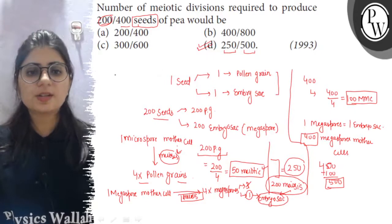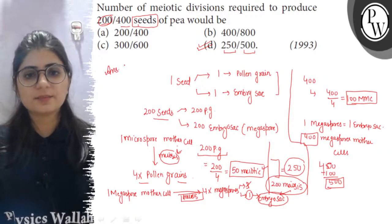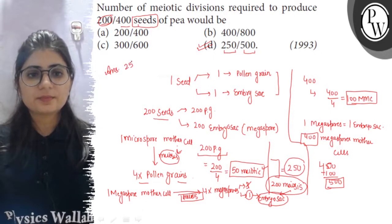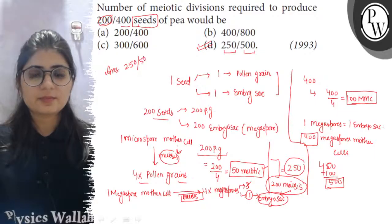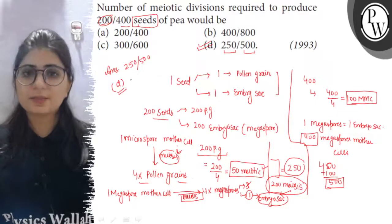So, to produce 200 seeds: 250 meiotic divisions, and to produce 400 seeds: 500 meiotic divisions are required. Option D is the right answer. All the best!